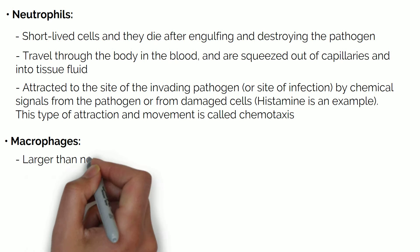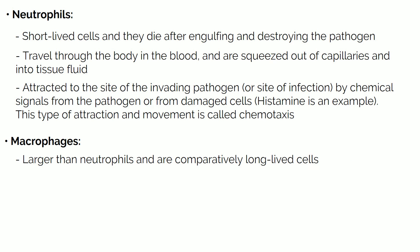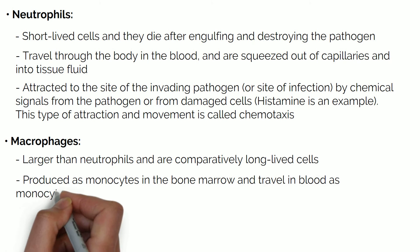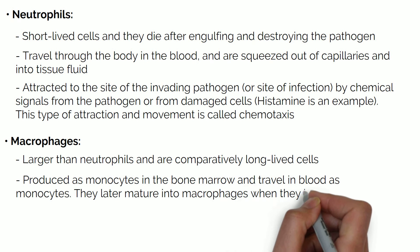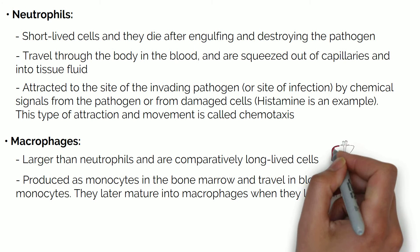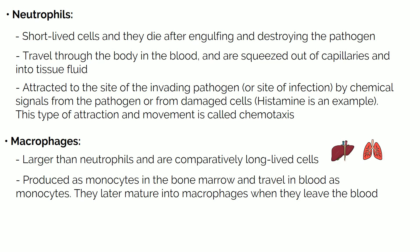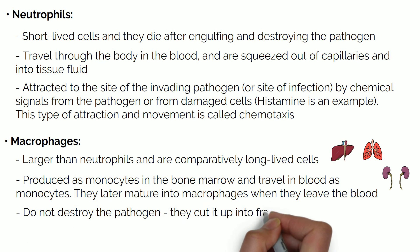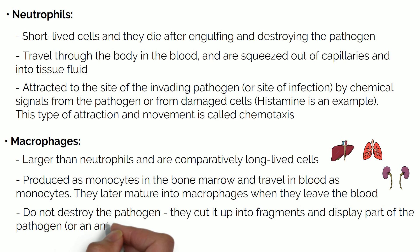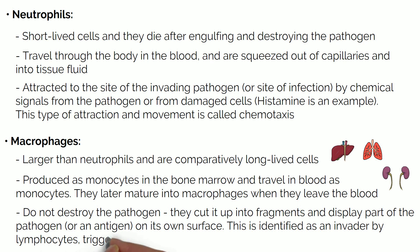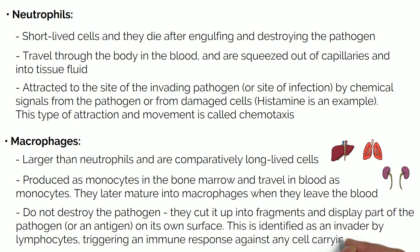Macrophages are larger than neutrophils and are comparatively long-lived cells. They are produced as monocytes in the bone marrow, travel in the blood as monocytes, and later mature into macrophages when they leave the blood. They move into organs such as the liver, lungs, spleen and kidneys. Macrophages do not destroy the pathogen; instead, they cut it up into fragments and display part of the pathogen or an antigen on their own surface. The displayed antigen is identified as an invader by lymphocytes, triggering an immune response against any cell carrying this antigen.